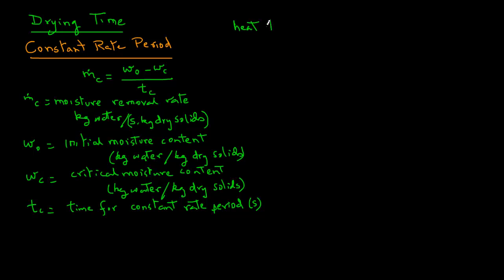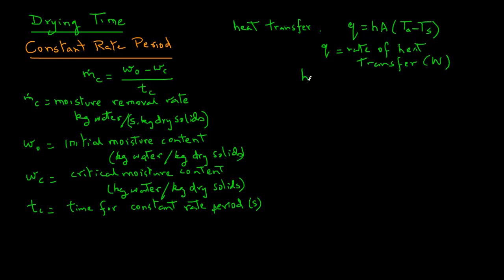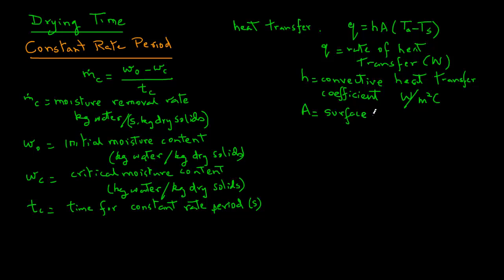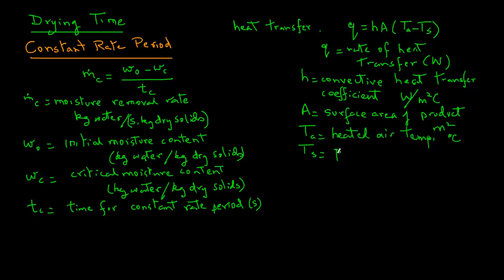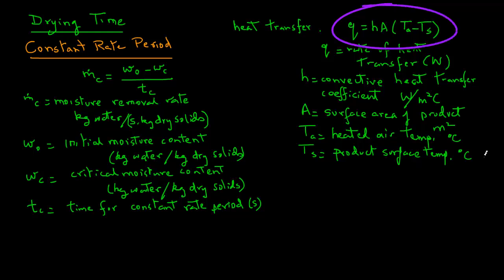If we look at the heat transfer during this constant rate period between the sample and the air, we have q equals hA times (ta minus ts), where q is the rate of heat transfer in watts or joules per second. h is the convective heat transfer coefficient in watts per square meter Celsius, A is the surface area in square meters, ta is the heated air temperature, and ts is the product surface temperature in degrees Celsius.